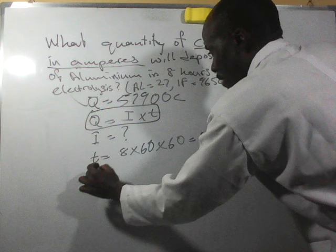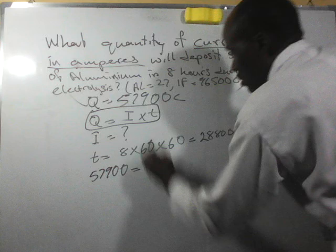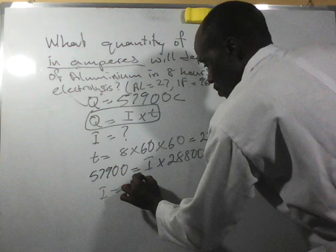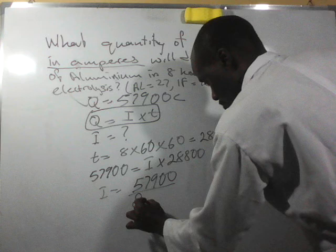Since the quantity of electricity is 57,900, and our current is unknown times time which is 28,800 seconds, then our current will be 57,900 over 28,800.